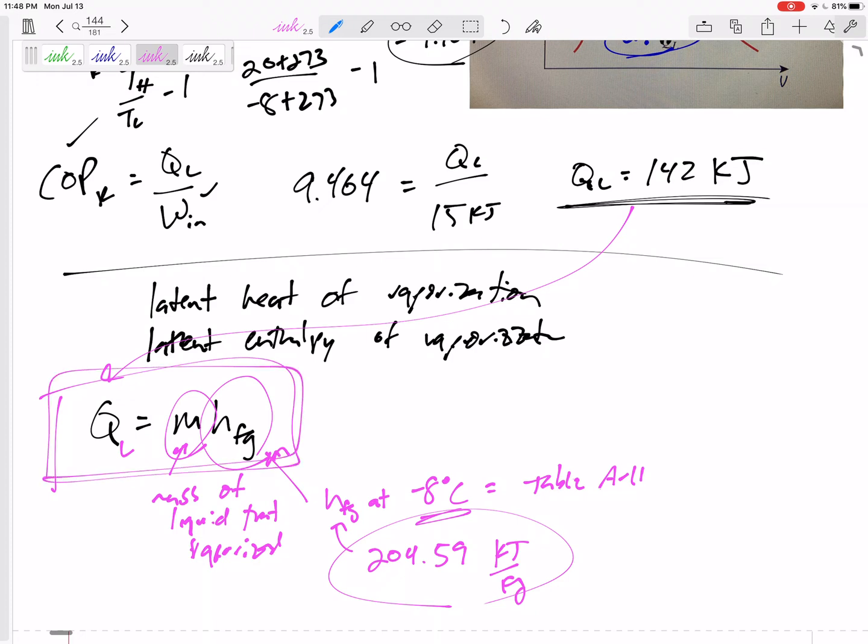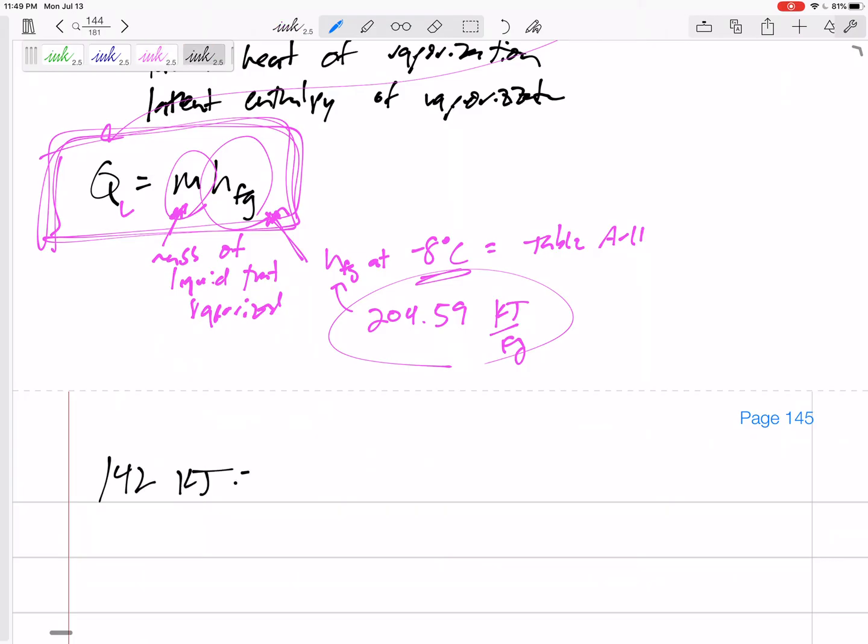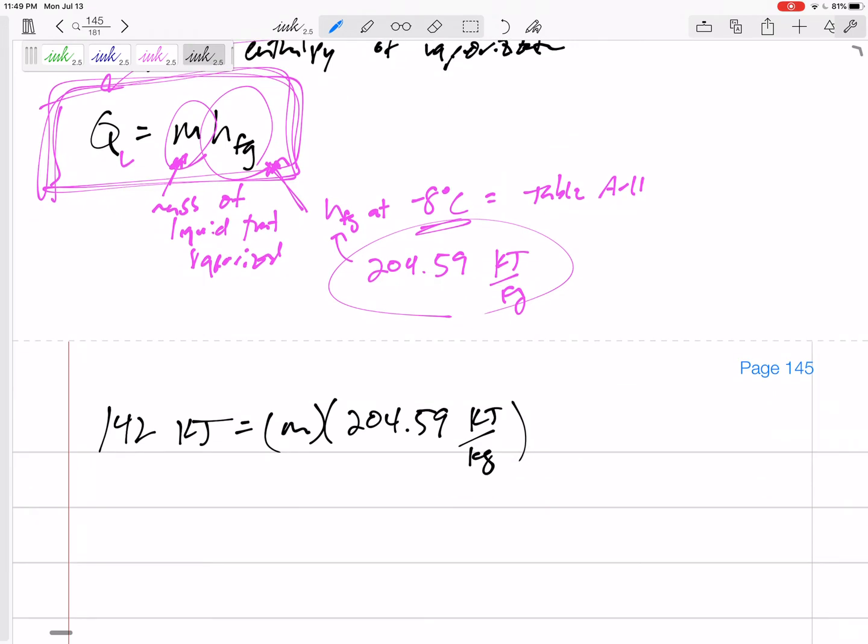This equation is true for Carnot refrigerants that are vaporizing: the mass of liquid that vaporizes times the HFG at that temperature. If I know this is 142 kilojoules equals the mass that vaporizes times 204.59, then the mass is 0.694 kilograms. That is the mass that vaporizes.